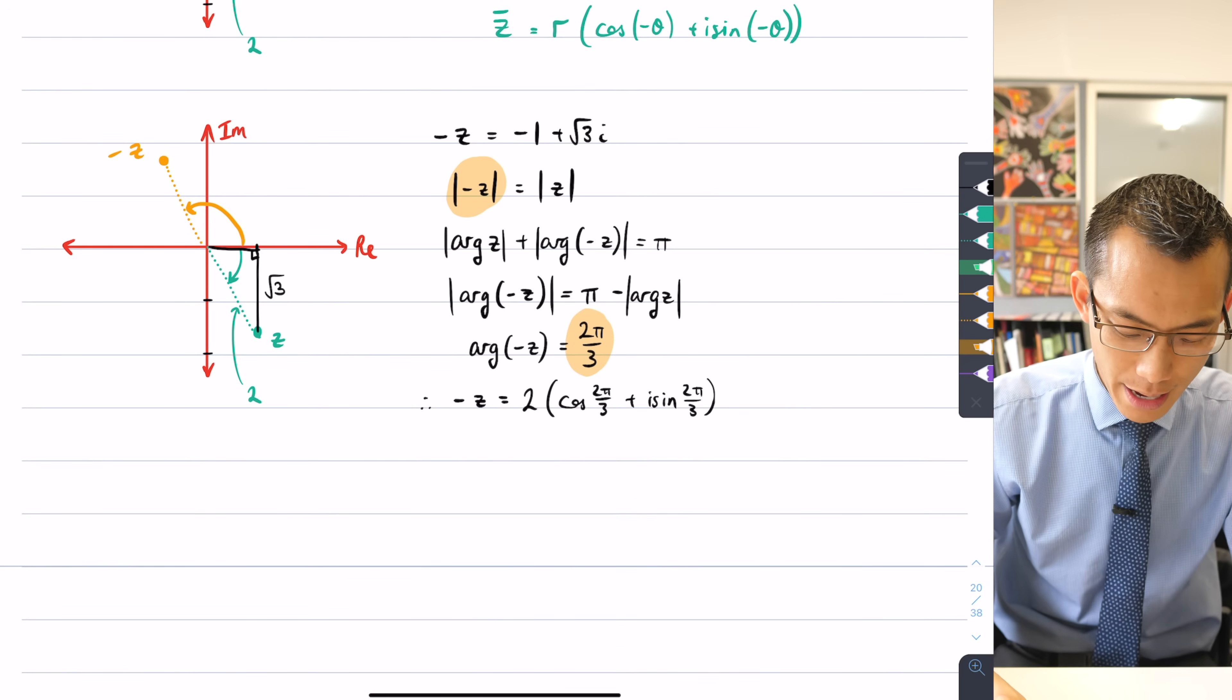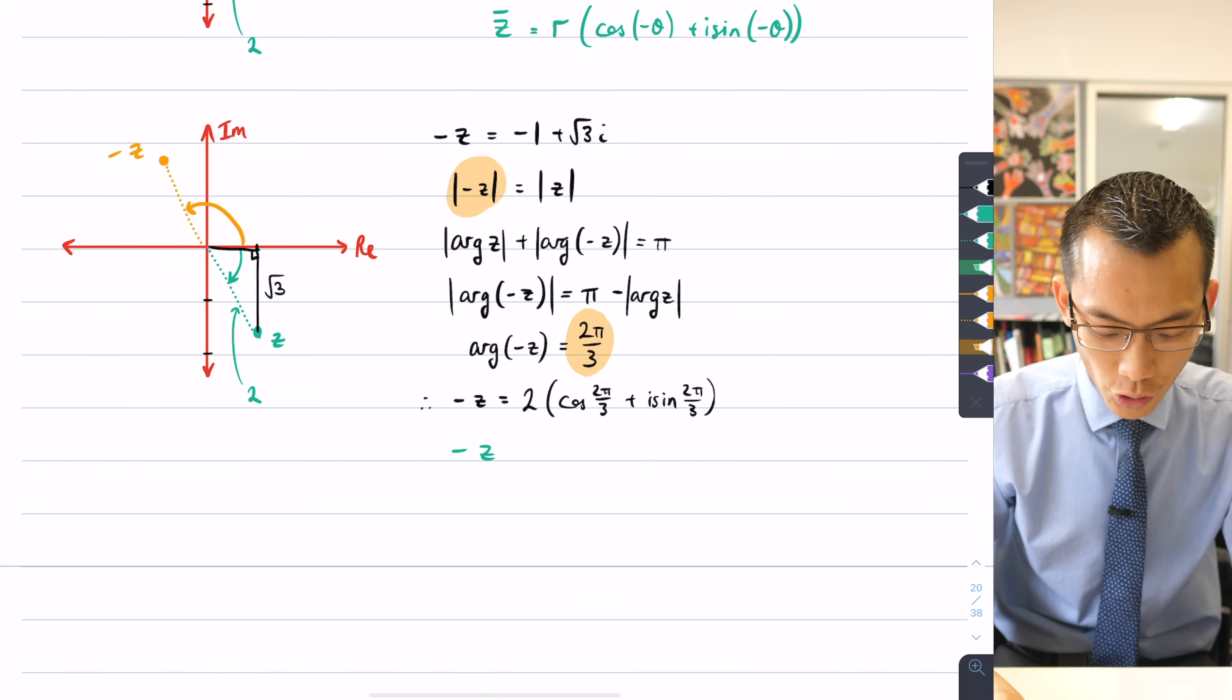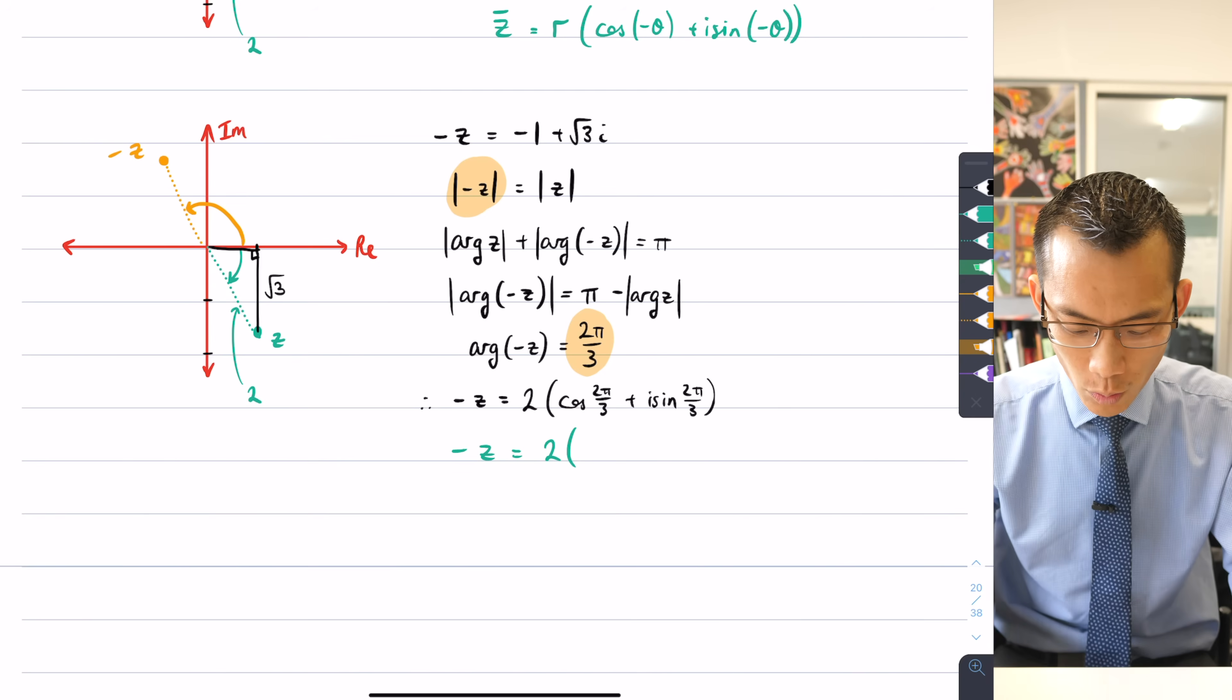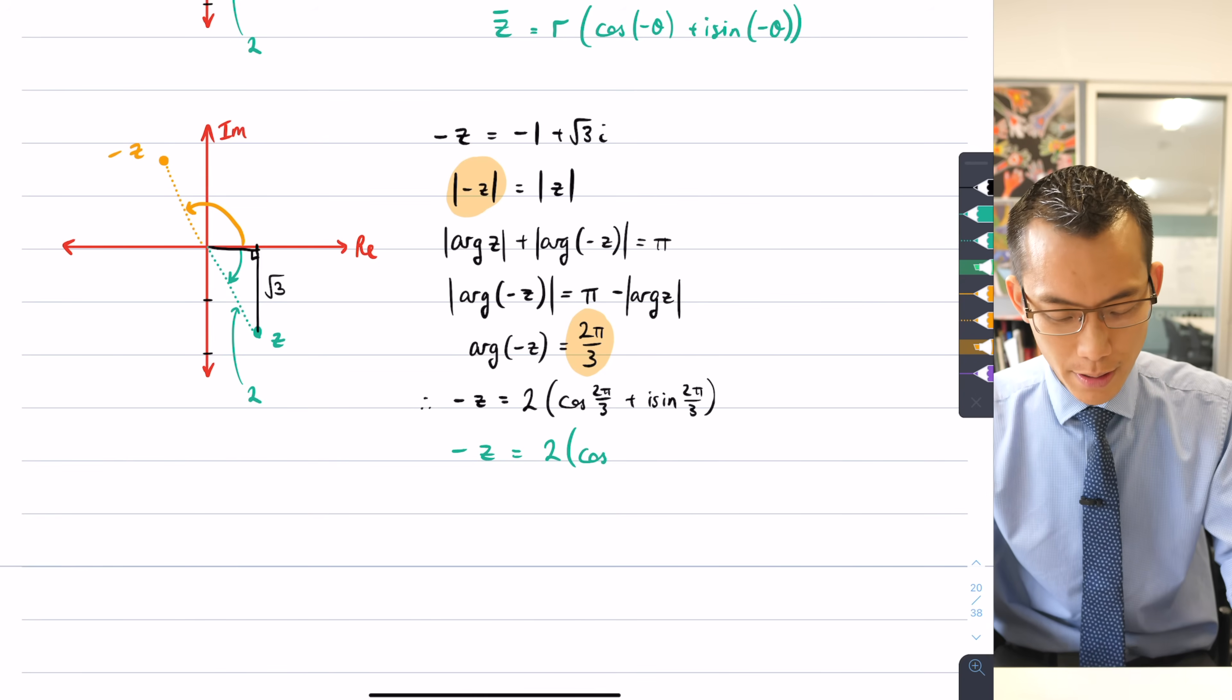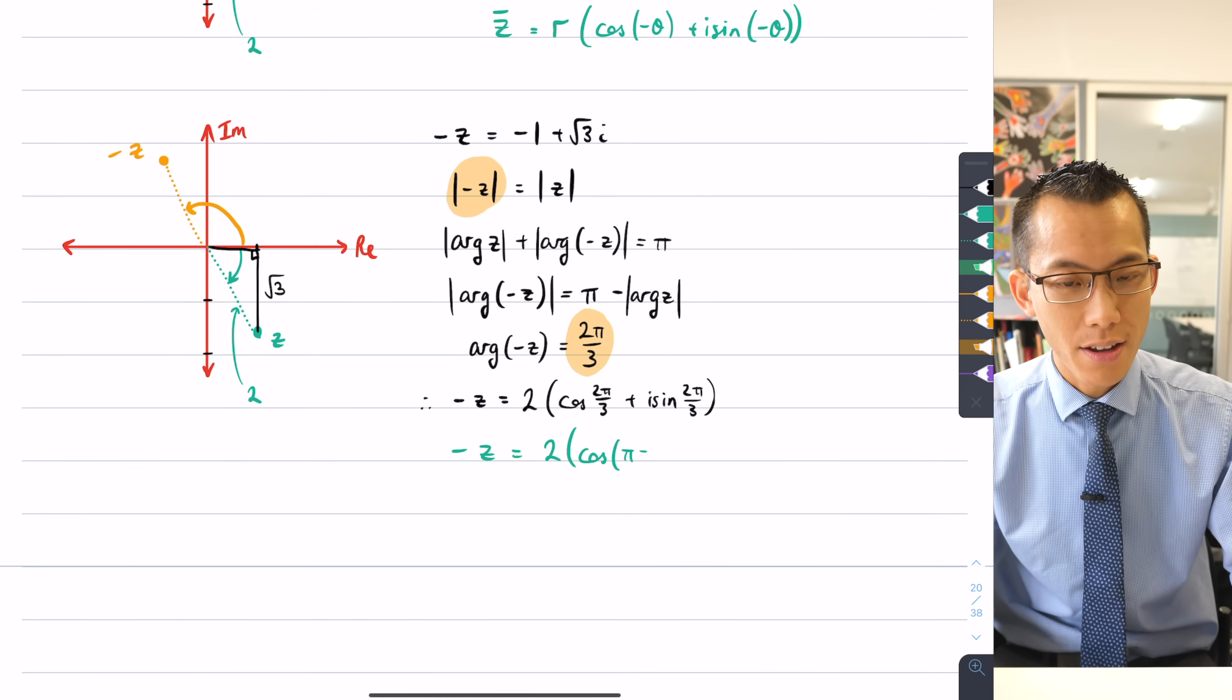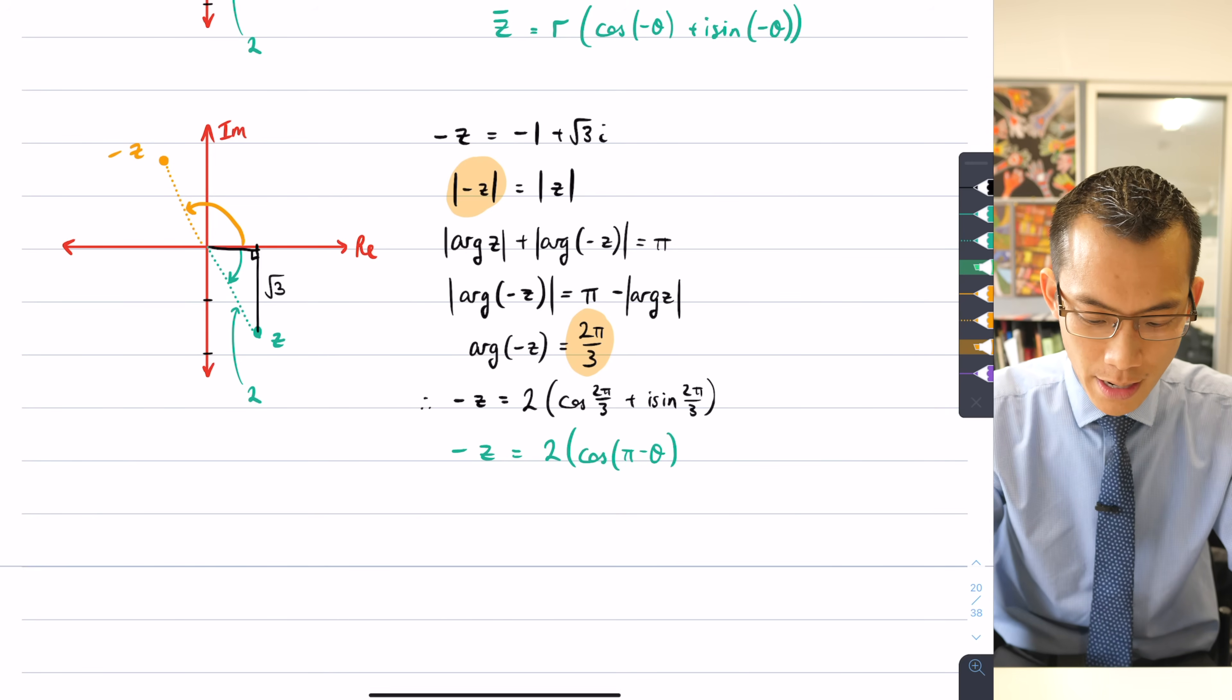Well, the whole idea is that if you say -z, you're going to again have the same modulus, what happens to the angle? Well, it's going to be the supplement, right? So it's going to be π - θ, whatever that happened to be, up here, right?